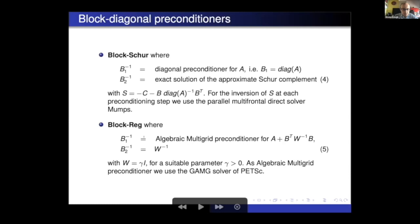The other block preconditioner is called Block-Reg, is based on a regularization technique. That means that the first block is approximated with, is augmented actually, the matrix A is augmented with this matrix, where W is the scalar identity. And then B_1 is the algebraic multigrid approximation of this matrix A plus B transpose W B. And for the block B_2, we just take the scalar identity. Of course, the choice of the scaling parameter gamma is crucial. We don't have a theoretical explanation on how to choose that. Empirically, we saw that the best choice is gamma, which goes as the order of h square. So as h square, where h is the mesh parameter.